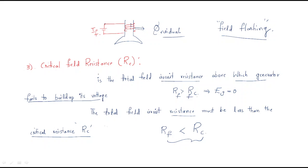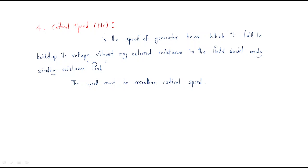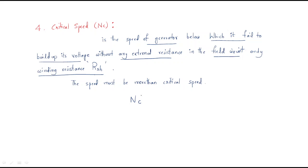Next, we discussed critical field resistance, and now we are entering into critical speed. Critical speed is the speed of the generator below which it fails to build up its voltage. Without any external resistance in the field circuit, only winding resistance RSH is available. The speed must be more than the critical speed; otherwise the generated EMF will become zero.